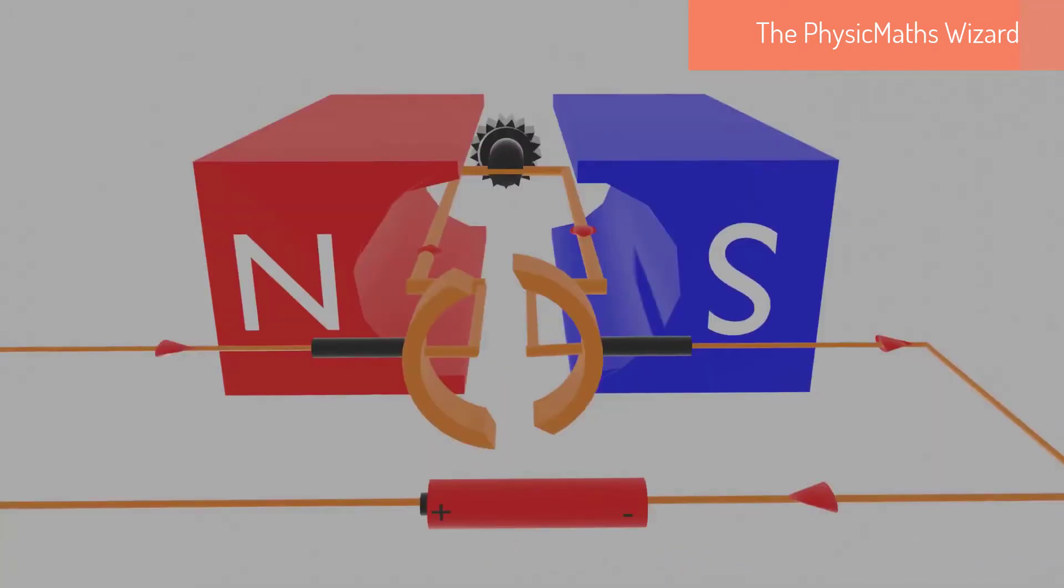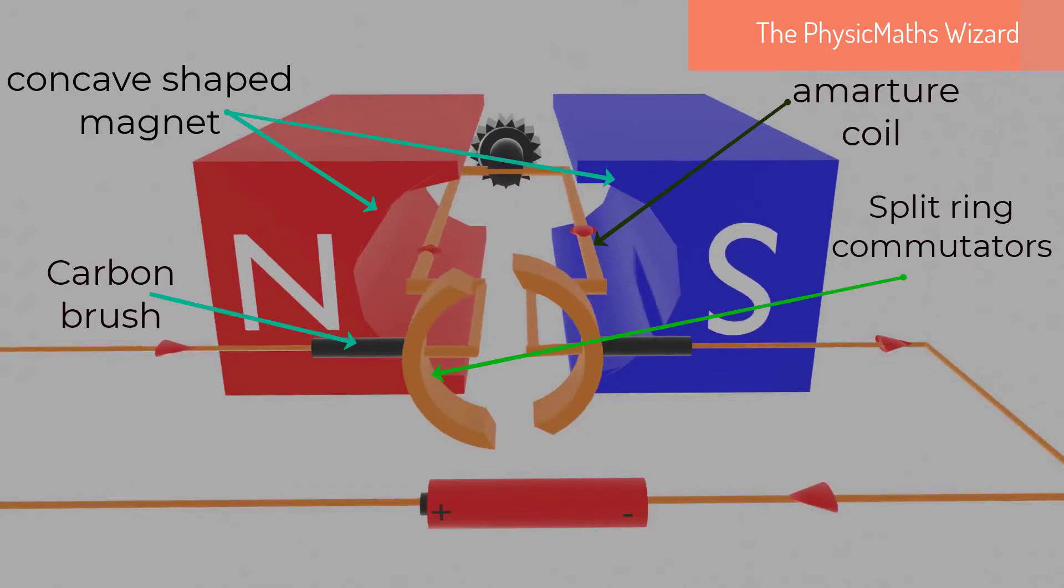The DC motor is made up of the following key parts: two poles of concave shaped magnet to provide a uniform and radial magnetic field, an armature coil that rotates when supplied with current, split ring commutators and carbon brushes for connecting the armature to the power source.